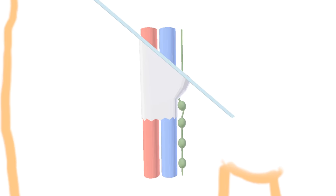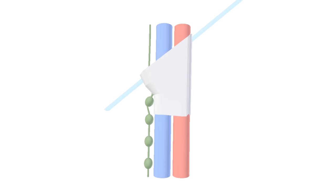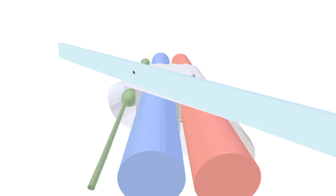The femoral sheath is made by extensions of the transversalis fascia anteriorly and the iliac fascia posteriorly. It begins at the inguinal ligament.